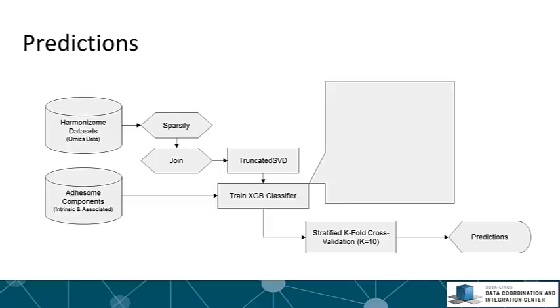The gist of it was we've sparsified and joined a bunch of Harmonizome data sets with omics data. Then we've used truncated SVD, singular value decomposition, which is basically PCA for sparse data sets. We've done some gradient boosting with the XGBoost library.